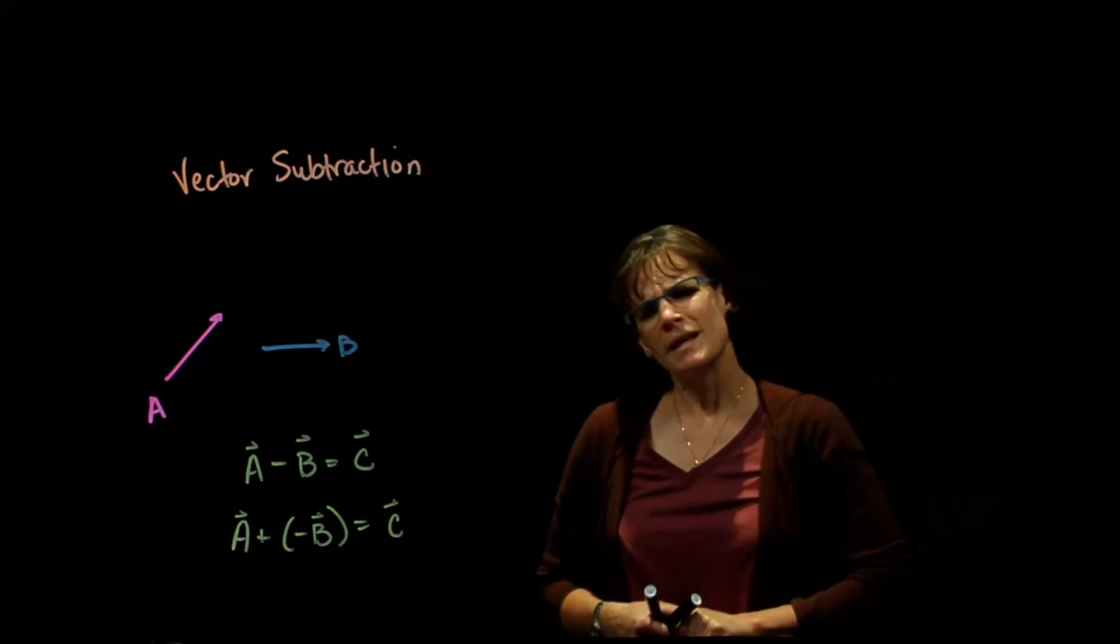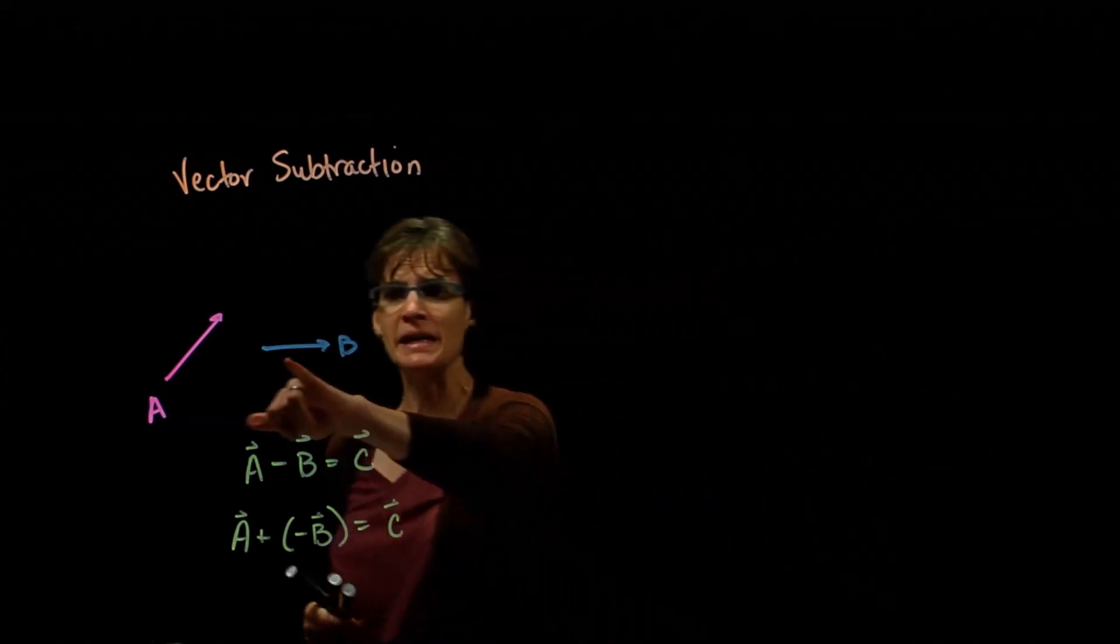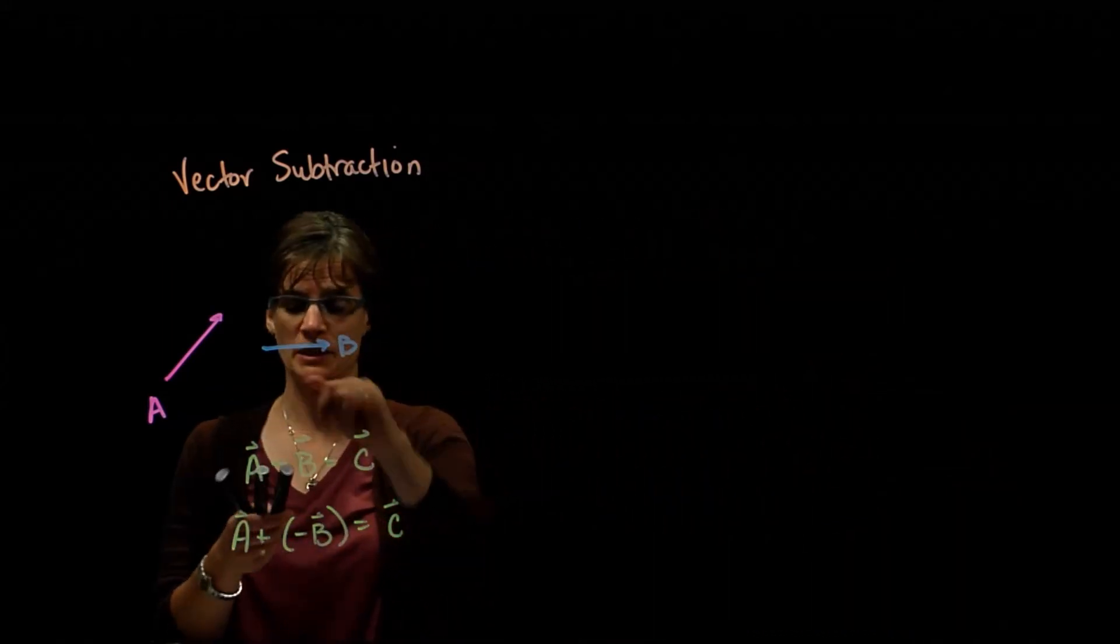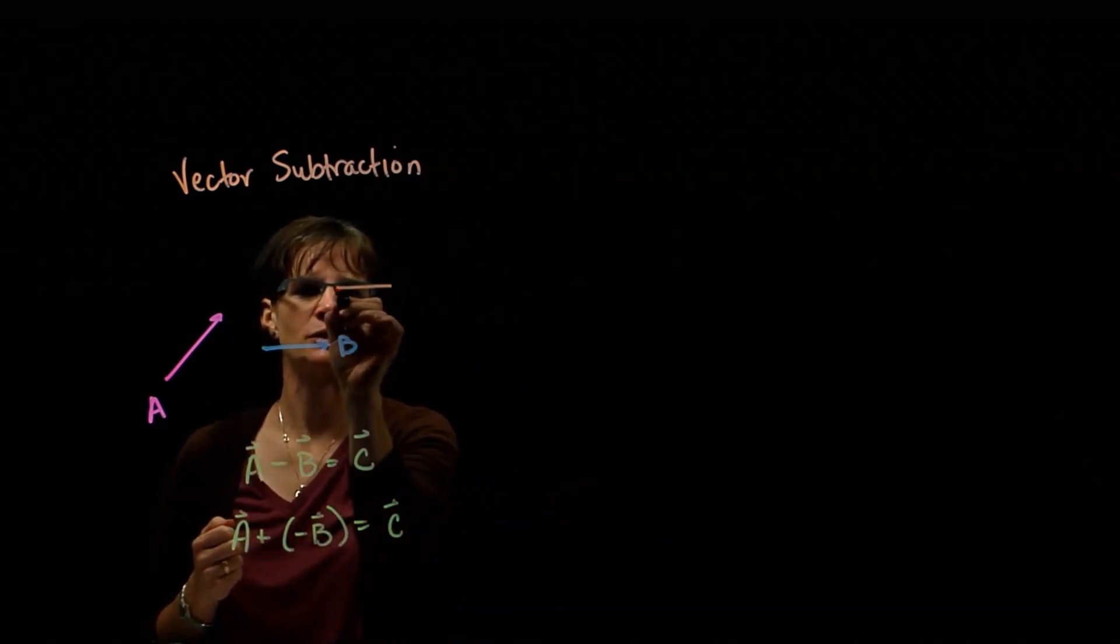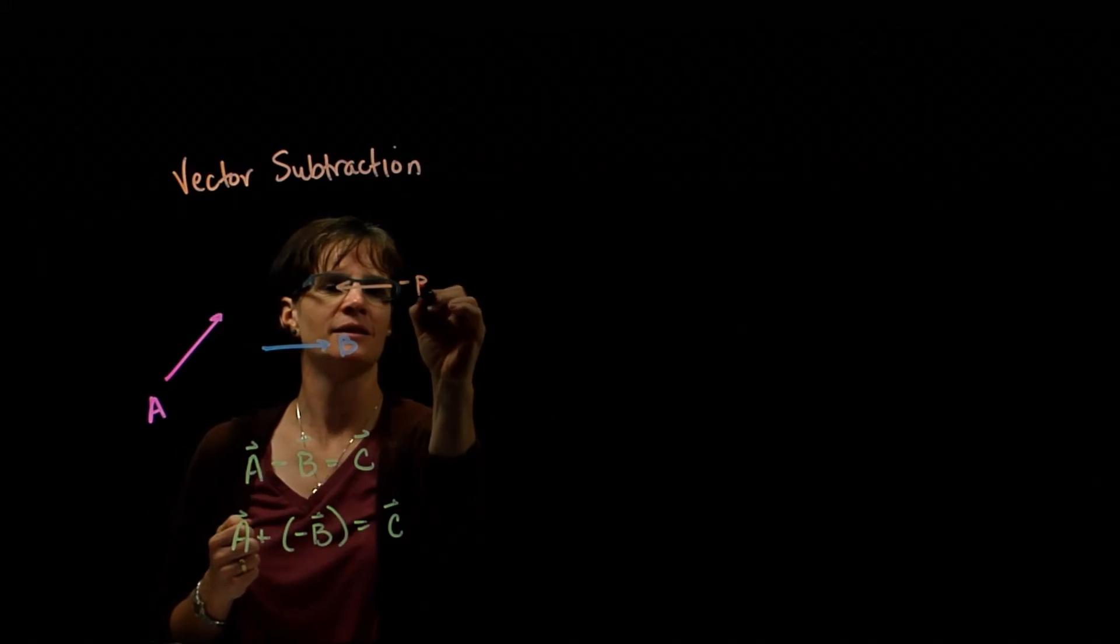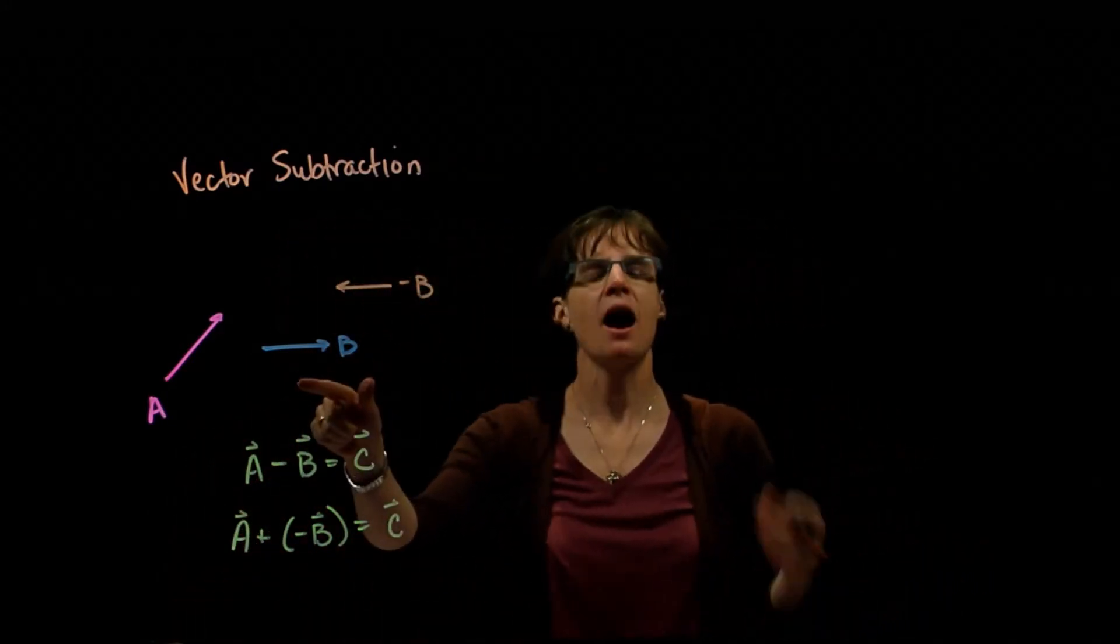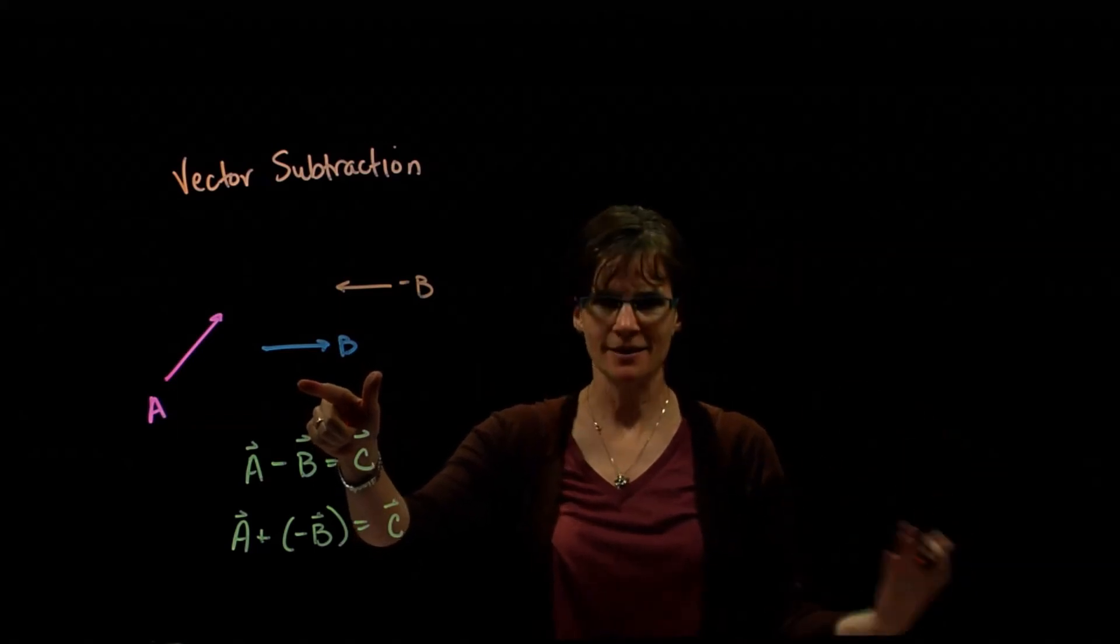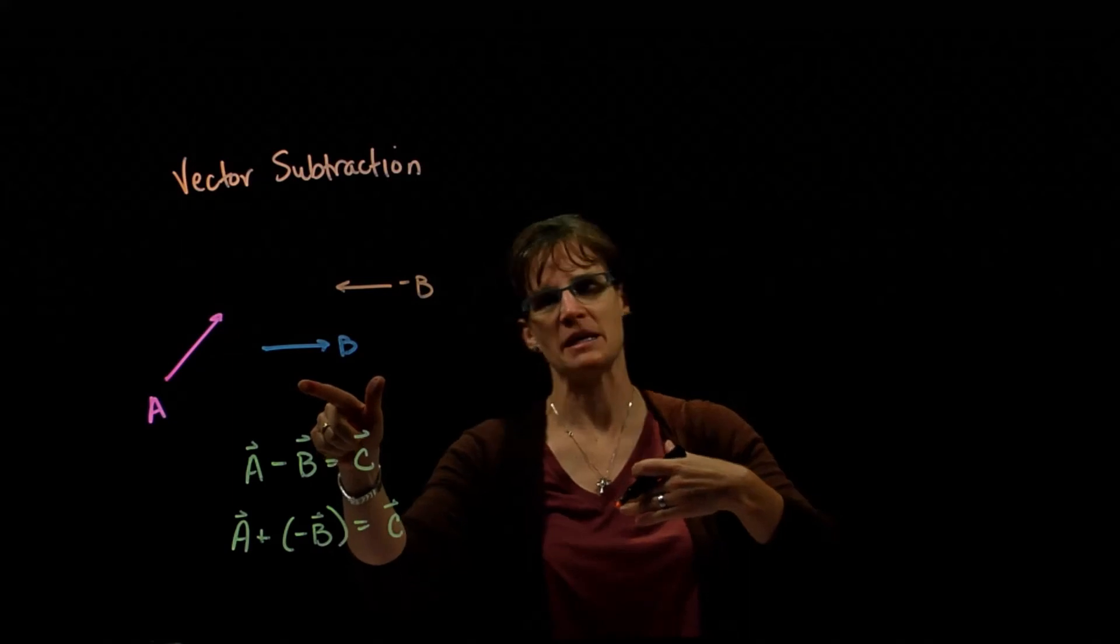So what is negative vector B? Well, it's just the opposite of B. Now vector B is pointing to the right. Negative B is of the same magnitude but pointing to the left. So our negative B vector is just the opposite vector to B.